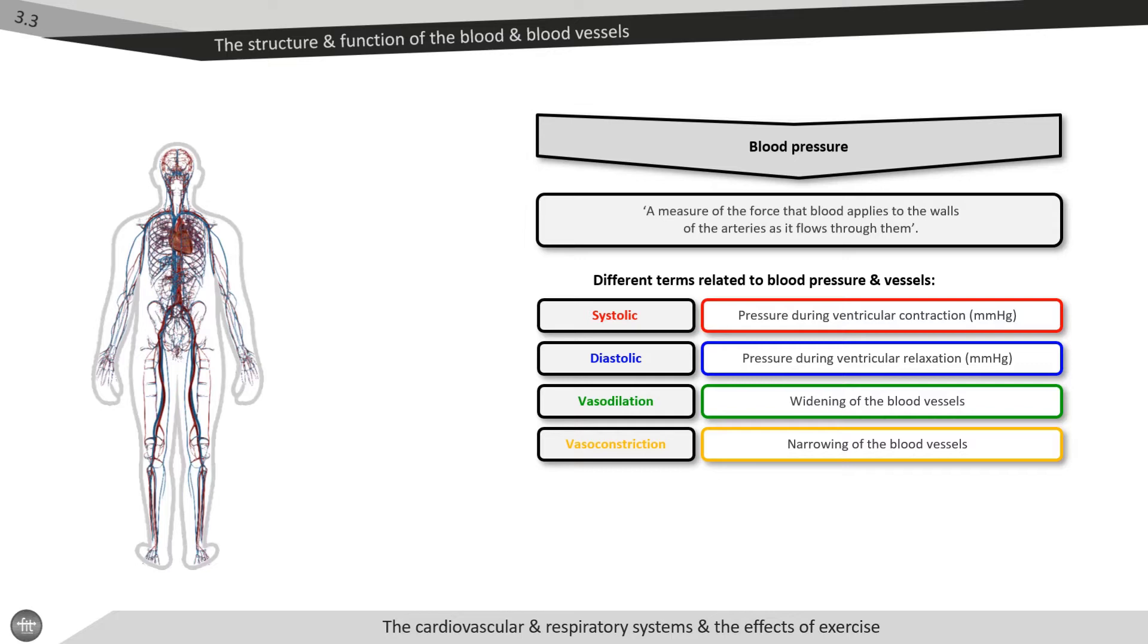An example of vasoconstriction and dilation occurring is after eating a meal, where the blood vessels that feed the digestive system become vasodilated to assist in digestion, while the surrounding musculature and blood vessels feeding those muscles are then vasoconstricted, reducing that local blood flow so all of the flow can travel towards the digestive tract.